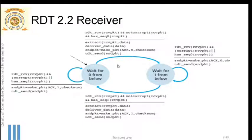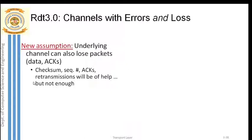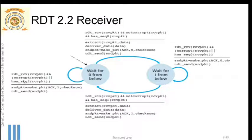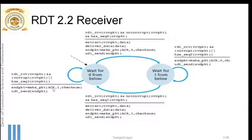After sending the ACK, the receiver moves to a new state, waiting for the next packet with sequence number one. The negative condition here is: if the received packet is corrupted, or if it has sequence number one (treated as a duplicate), the receiver still sends a positive acknowledgement but with sequence number one — ACK 1 — with checksum.